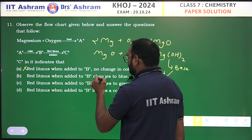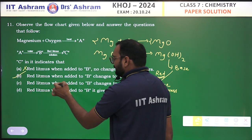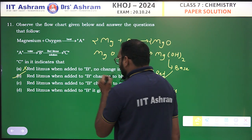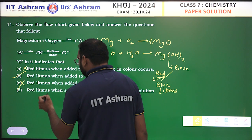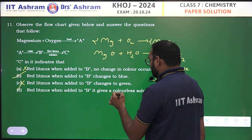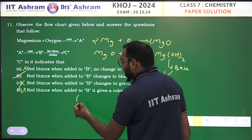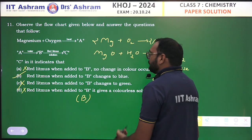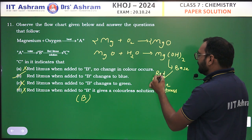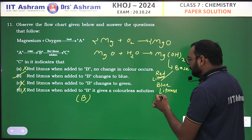Red litmus when added to B changes to green — wrong. Red litmus when added to B gives a colorless solution — wrong. Option B is the correct answer because MgO is a base that changes red litmus paper into blue.